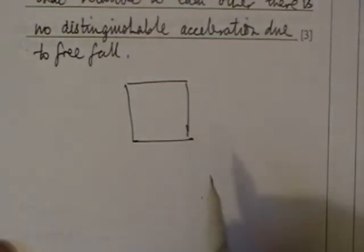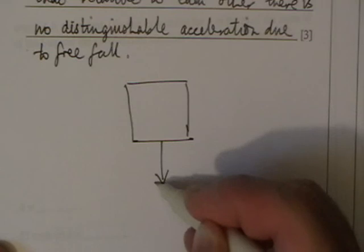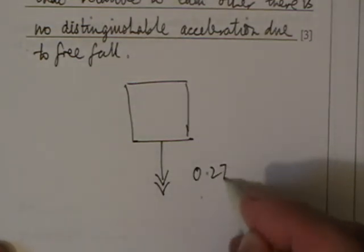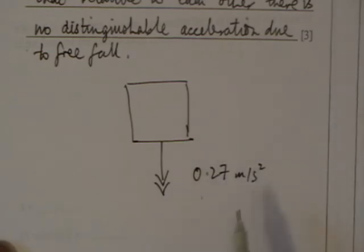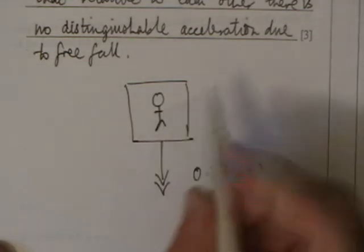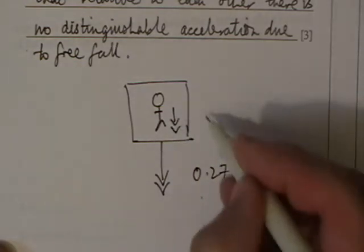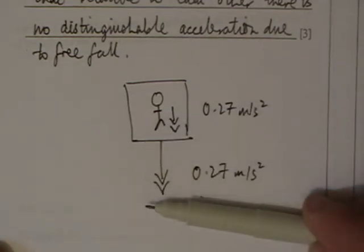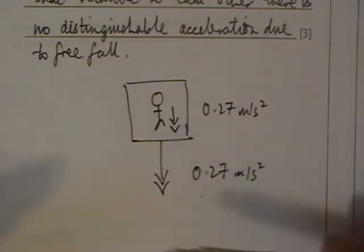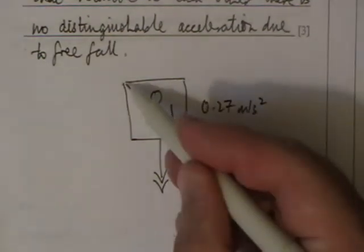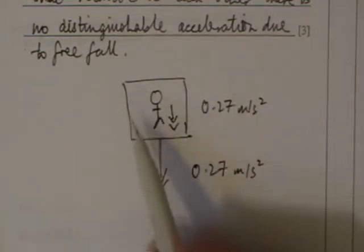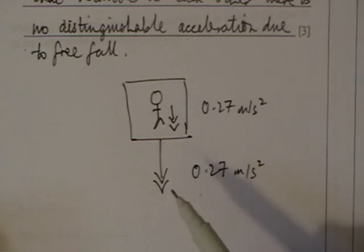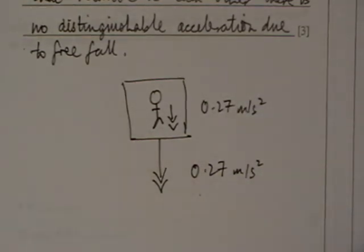Consider this: the satellite is accelerating downward at 0.27 m/s², and the astronaut inside is also accelerating downward at 0.27 m/s². The floor is moving away from the astronaut at the same rate that he's moving towards it. Therefore, the frame of reference for the astronaut is the satellite, and because it's moving away from him at the same rate he's moving towards it, he experiences this perception of apparent weightlessness.